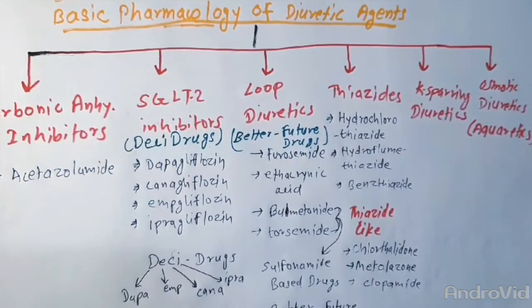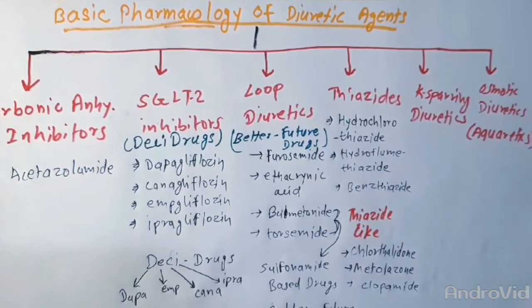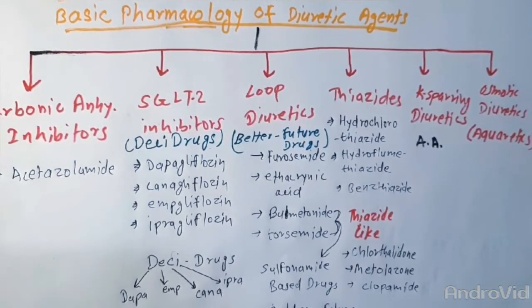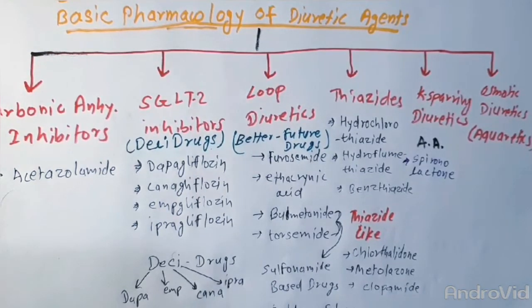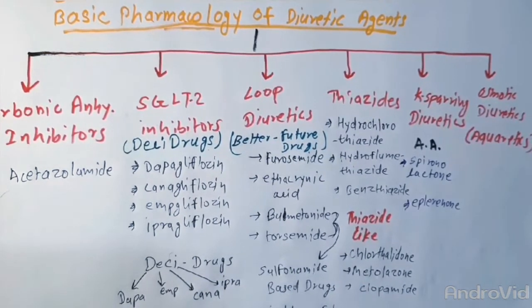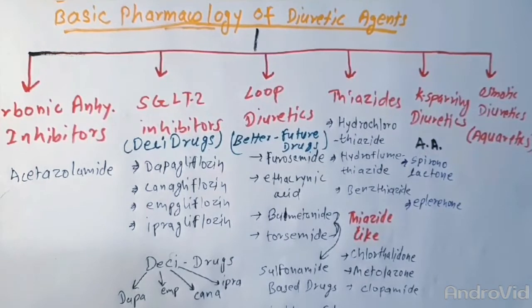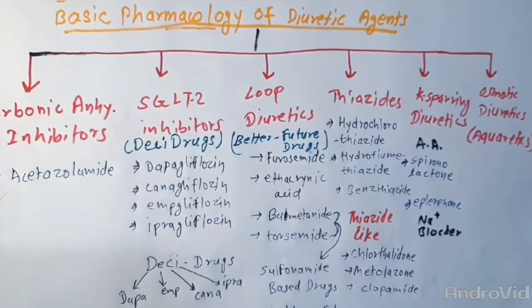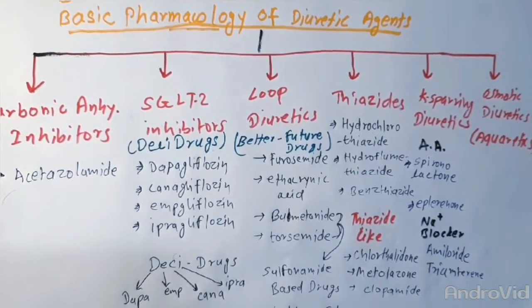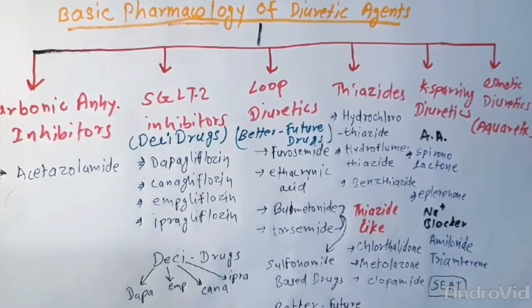Now, the potassium sparing diuretics which prevent potassium secretion can be either aldosterone antagonists like spironolactone and eplerenone, or sodium channel blockers like amiloride and triamterene. We can remember these drugs with the mnemonic SET.